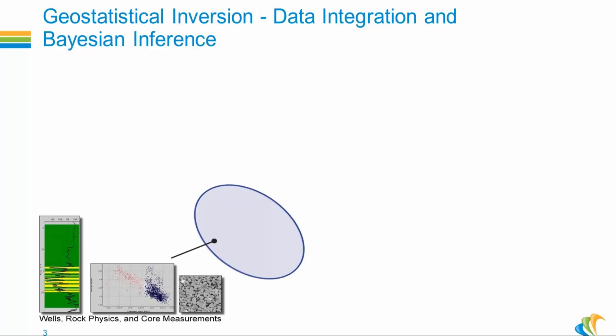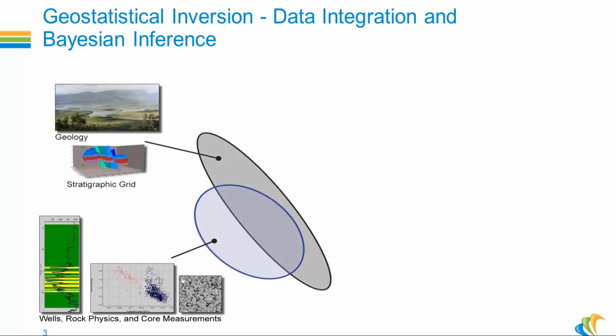Let's assume that this blue oval represents the solution space of the well information - that is the range of possible reservoir models that can be estimated using the well information alone. And now let's assume that the gray oval represents the range of models predicted by the geology. The set of models which satisfies both sets of data is represented by the intersection of the two ovals and it's a much smaller set of answers.